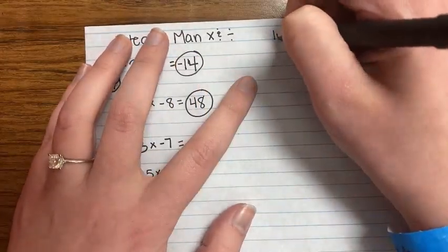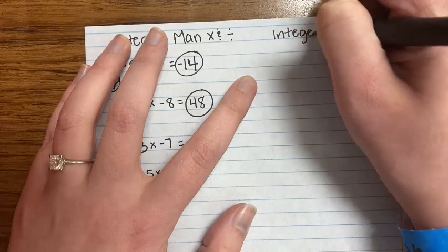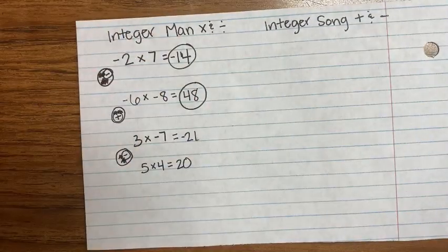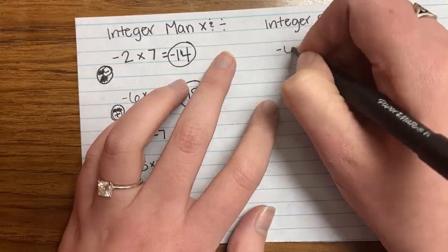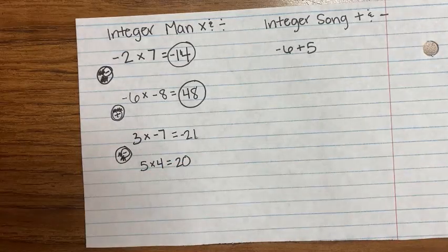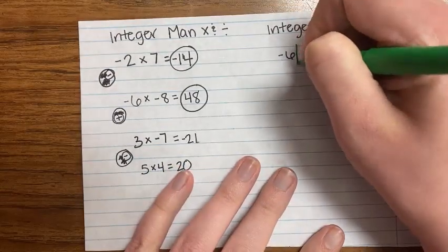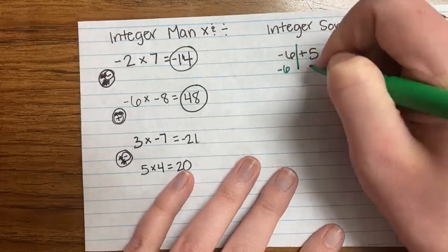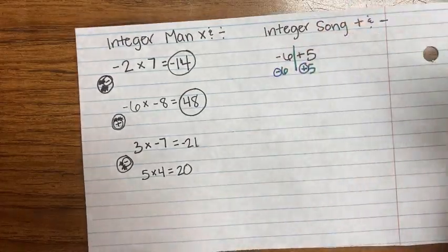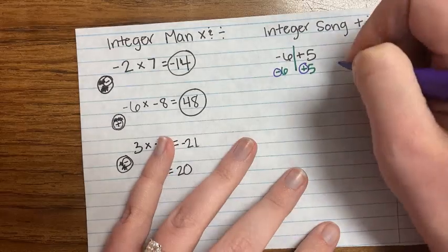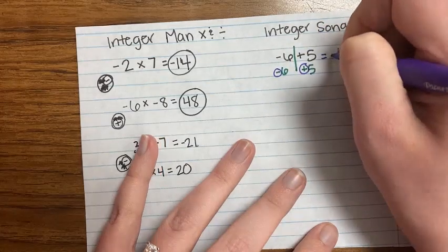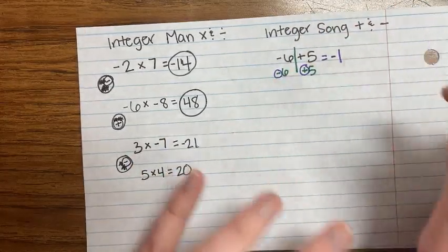Then we're going to look at integer song. We use our integer song when we add and subtract. If I have something like negative 6 plus 5, I draw my line and separate my numbers right after the first number — negative 6, positive 5. Are my signs the same or different? I have a negative and a positive, so they're different. I subtract: 6 minus 5 is 1. Take the sign of your bigger number — that's what we always forget. 6 is bigger and it's negative, so my answer is negative 1.